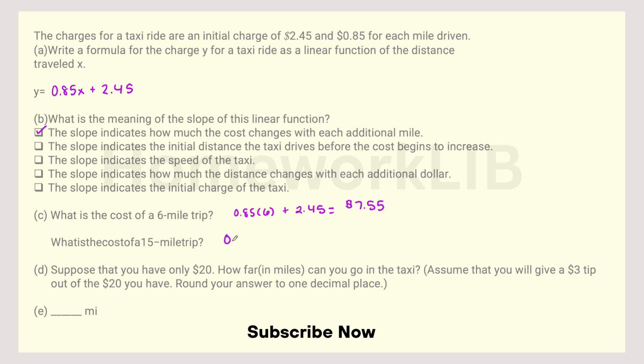For a 15-mile trip, you're going to do 0.85 times 15 plus 2.45. 0.85 times 15 plus 2.45, and that's $15.20.